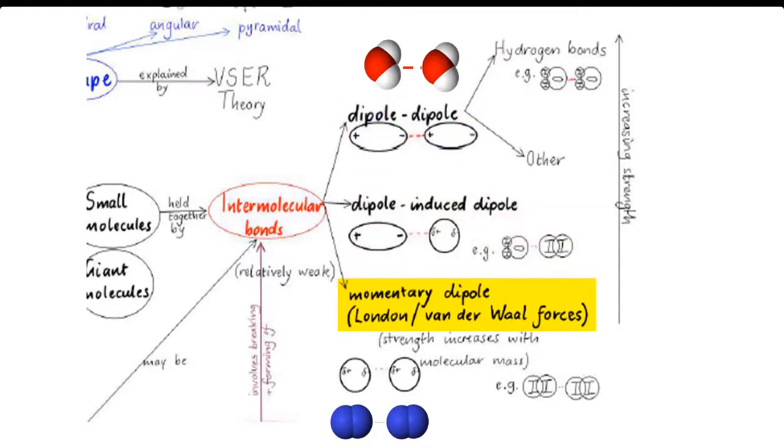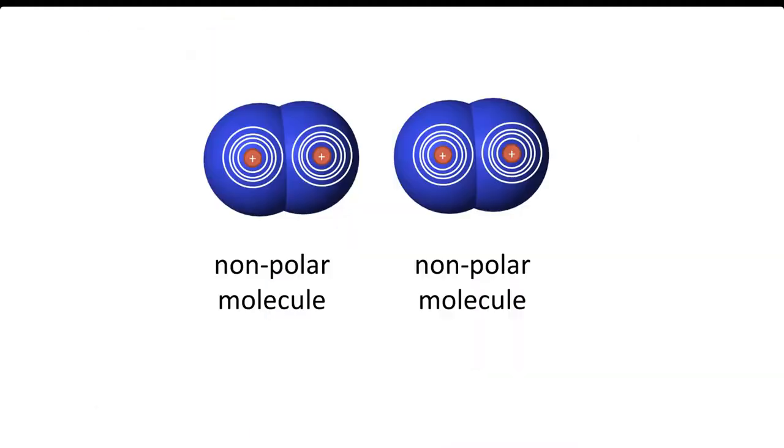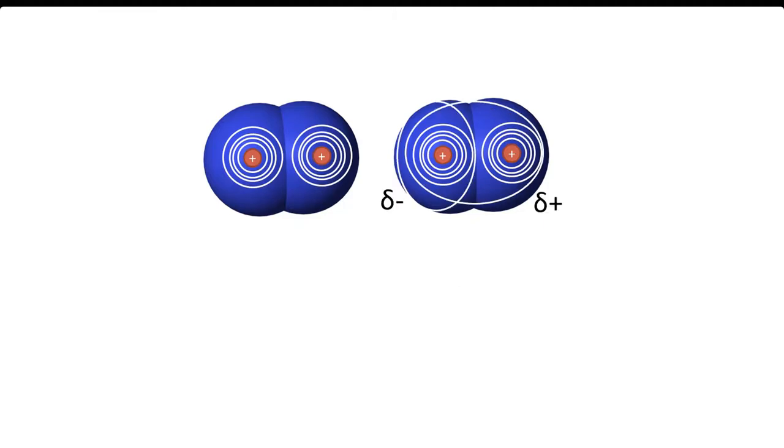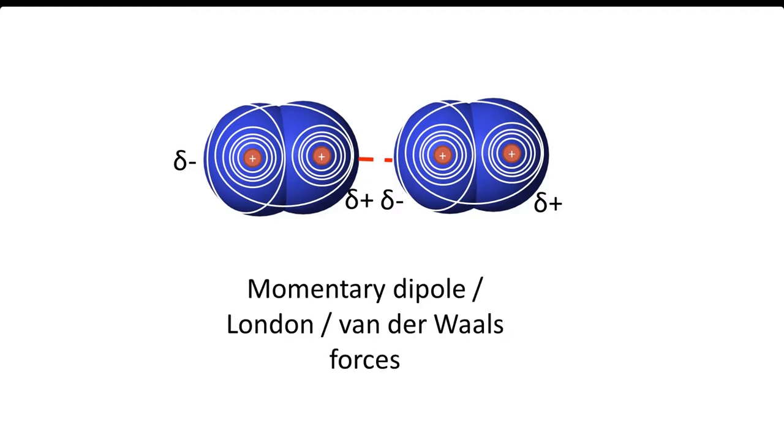Momentary dipole forces are also called London or van der Waals forces. They exist between non-polar molecules. Due to random motion of the electrons, one of these non-polar molecules might have a slight dipole at any one moment, because more of its electrons happen to be on one side of the molecule than the other. This induces a dipole in an adjacent molecule. London forces are very weak.